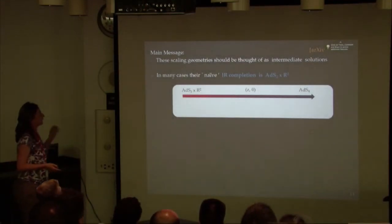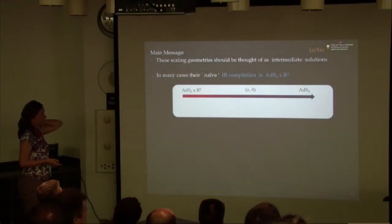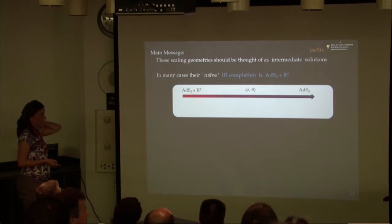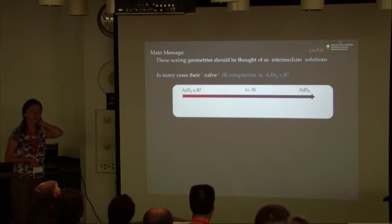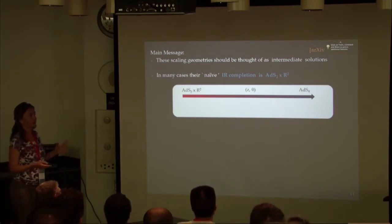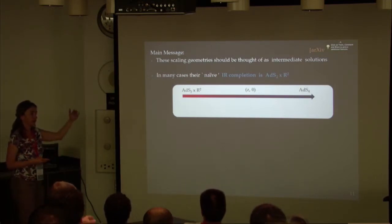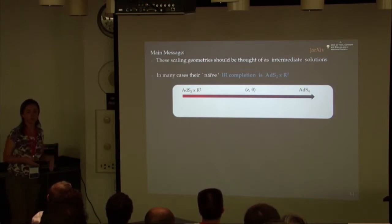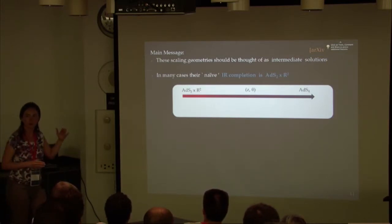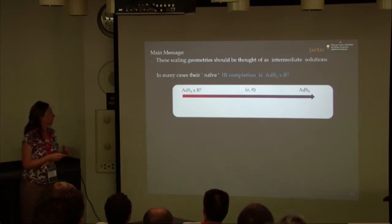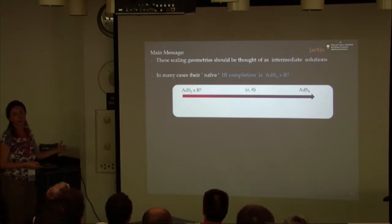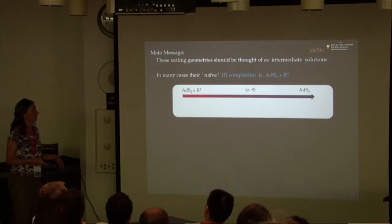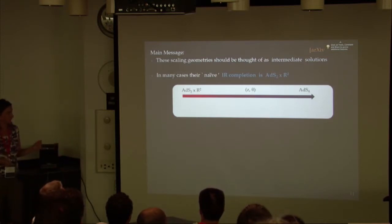The flow you should have in mind is that you would have some scaling geometry that would be valid in some intermediate part of your geometry, but in the deep infrared, provided appropriate corrections, you would find you get AdS2 times the plane. The example of quantum corrections is just one way to do that. There are more ways to do it. It seems AdS2 times the plane was a somewhat generic endpoint of these systems.